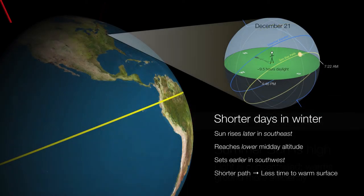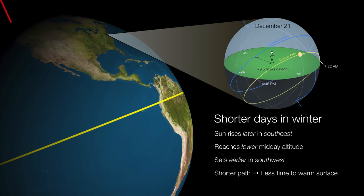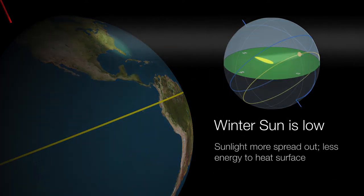By contrast, in wintertime when the northern hemisphere is tilted away from the sun, the sun rises later in the morning and sets earlier in the afternoon. It rises from the southeast and sets in the southwest, so it has a much shorter path through the sky. We only get about nine and a half hours of daylight during the winter solstice, giving the sun less time to warm us. The same column of light that was concentrated in summer is now spread out over a much wider area because the northern hemisphere is tilted away from the sunlight, so there's less energy to heat the ground and it's not very efficient.